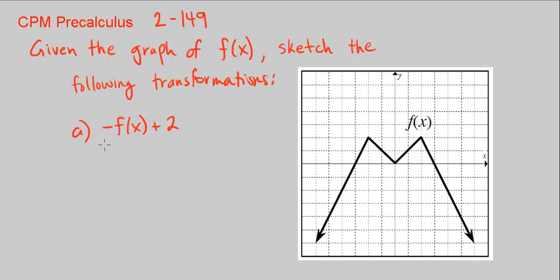So what do we know what happens? The negative is a reflection across the x-axis, and the plus 2 is shifted up vertically two units. This is a vertical shift up two units, and this is a reflection across our x-axis. Be careful, do not put it across the y-axis, the x-axis.